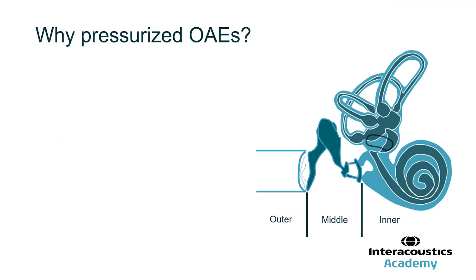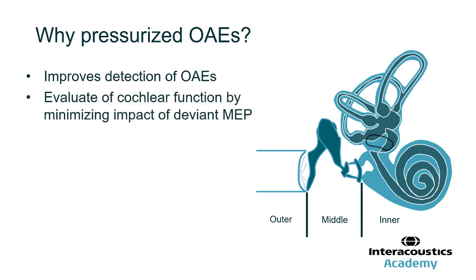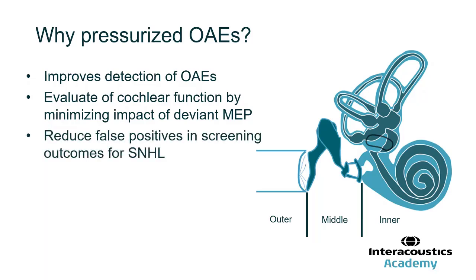I always like to start the talk with why, even though I haven't really presented any of the information yet. Hopefully I'll clear a lot of the information up during the talk. But why would we want to pressurize otoacoustic emissions? The first reason is that it improves the detection of OAEs, which I will show you in the coming slides. By improving the detection of OAEs, you're also able to evaluate cochlear function by minimizing the impact of deviant — meaning positive or negative — middle ear pressure, which stands to reduce false positives in screening outcomes for sensorineural hearing loss.